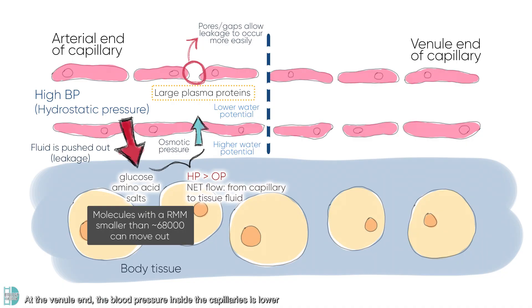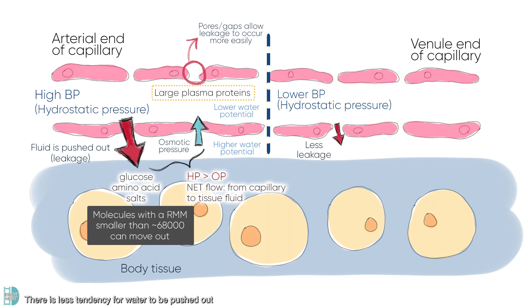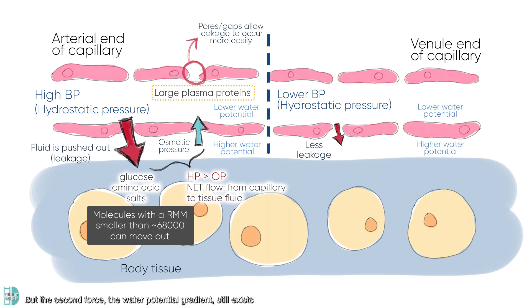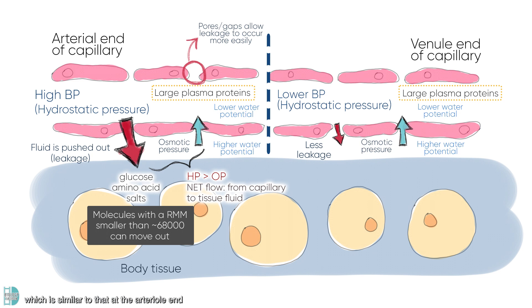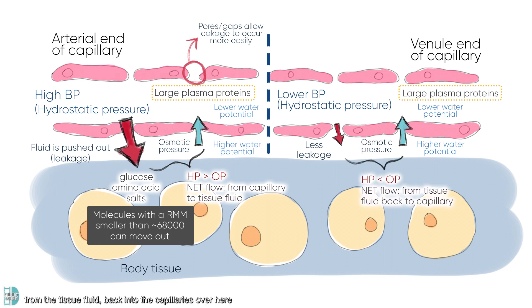Now let's look at the venule end of a capillary bed. At the venule end, the blood pressure inside the capillaries is lower, so there is less tendency for water to be pushed out of the capillaries into the tissue. But the water potential gradient still exists, caused by the difference in the concentration of dissolved proteins, which is similar to that at the arterial end. The net movement of water is therefore from the tissue fluid back into the capillaries.